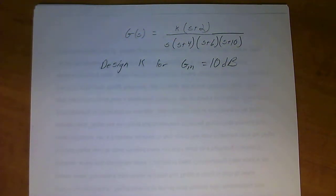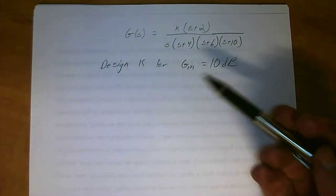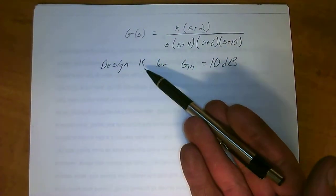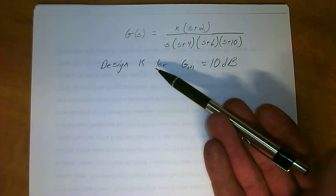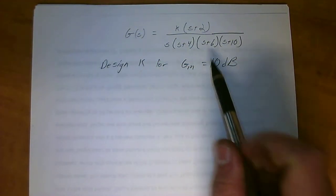Hello everyone and welcome to Control Systems Analysis and Design. Today we're going to be designing a gain compensator. We're looking for a gain margin (GM) of 10 decibels.